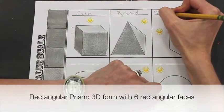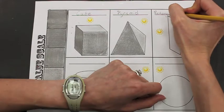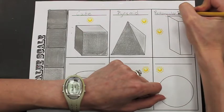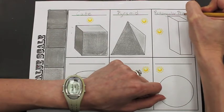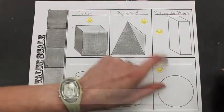Write rectangular prism on the line to label the form. To shade a rectangular prism is exactly like a cube, except it has different shaped faces.